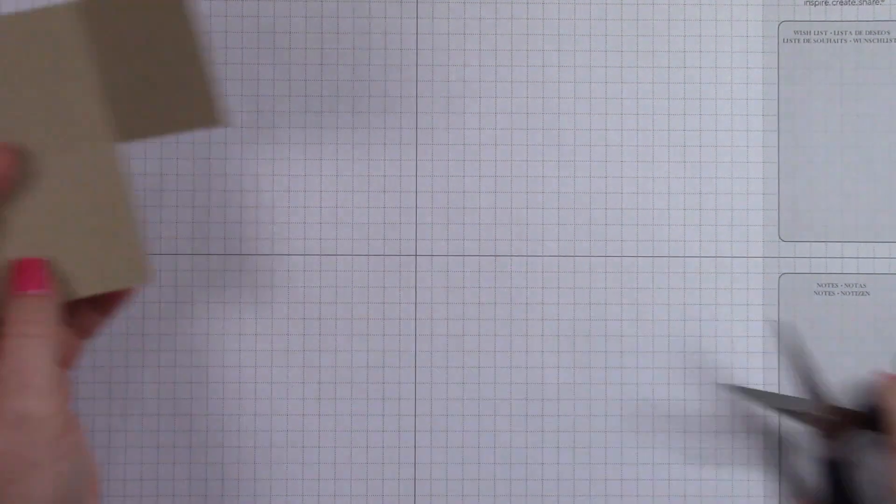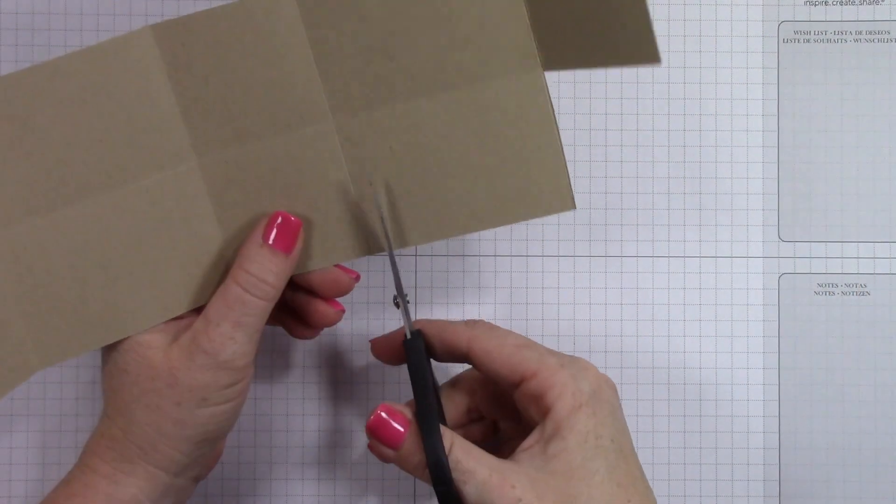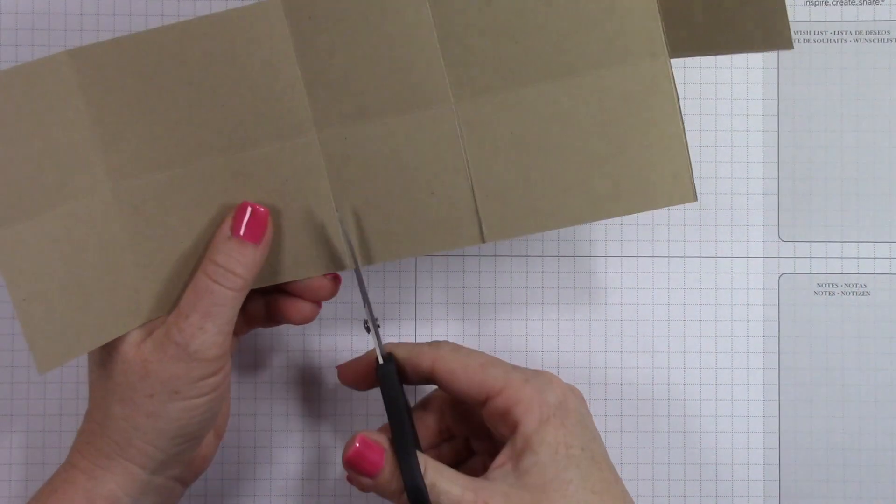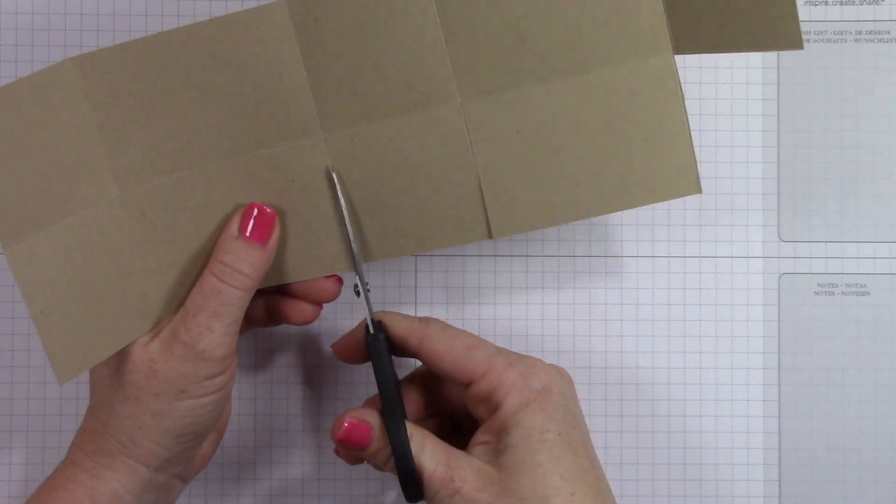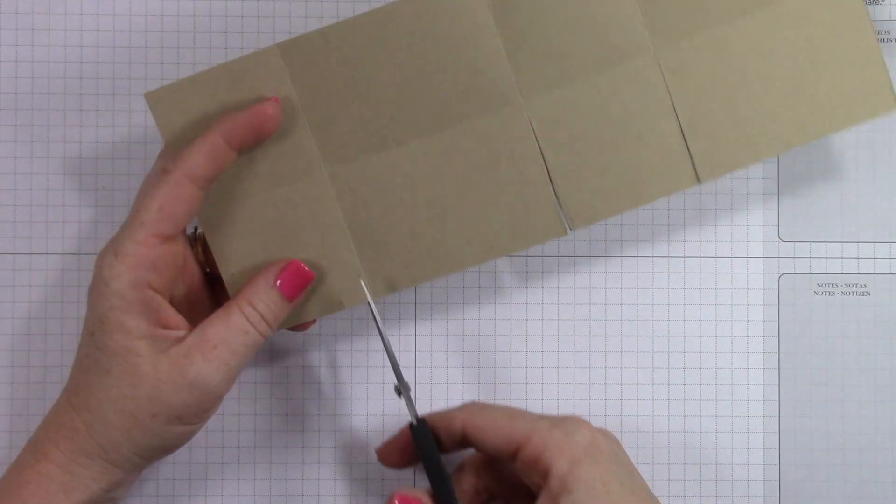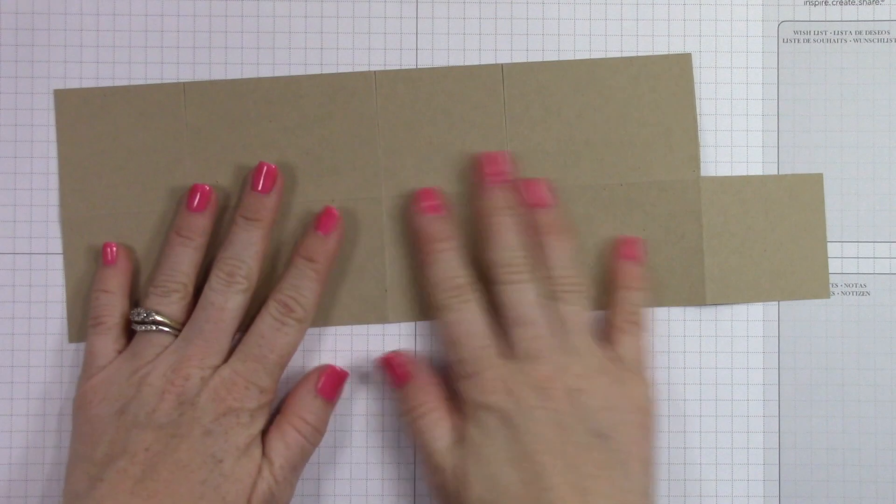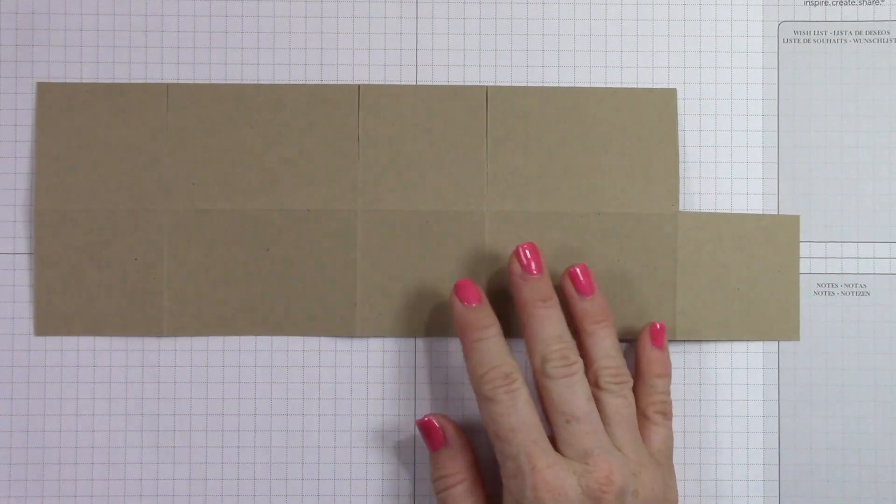You can see here I'm going to cut away one of these little skinny tabs at the end. And then I'm going to cut up to the score line on each fold. Now this is actually going to be the top of my box, not the bottom, because this box doesn't need a bottom or a top as far as closure goes. And it's just going to pop open.